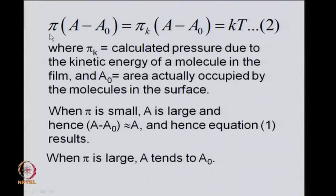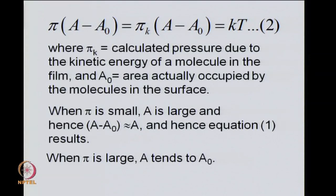Now we do not have the problem of A approaching 0: when pi becomes very large, A tends to A₀. We allow for this actual area A₀ occupied by molecules in the surface. When pi is small, the area per molecule is very large, so A₀ is small compared to A, and we can approximate A − A₀ by A, recovering pi·A = kT. So the ideal surface equation of state emerges from equation 2 when pi is very small, and when pi is very large, A approaches A₀.